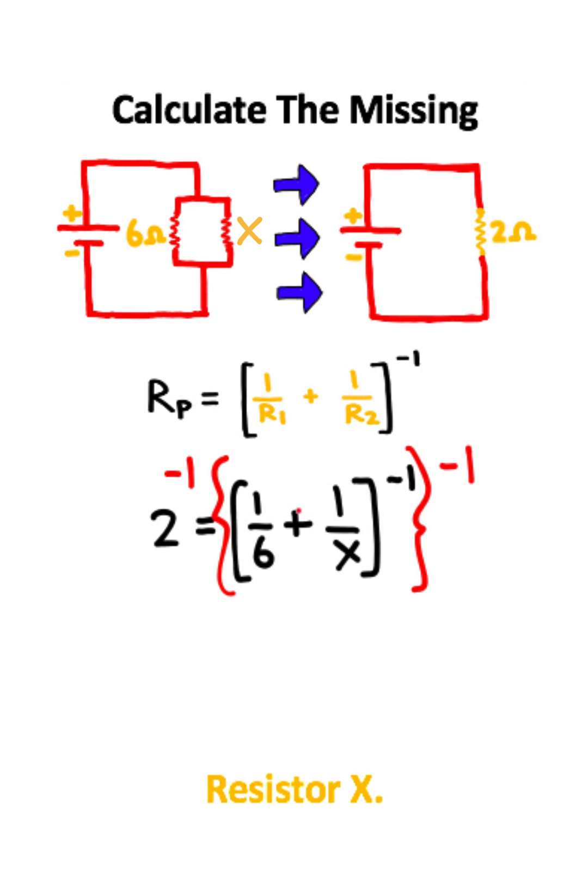So I can take the inverse of both sides of this equation to get the negative ones to cancel on the right side. The inverse of 2 is simply 1 half.